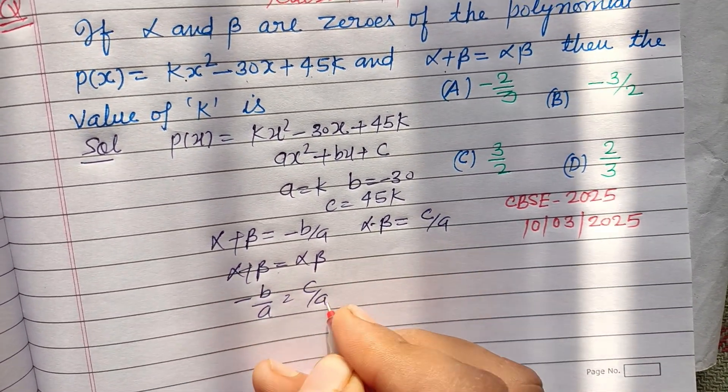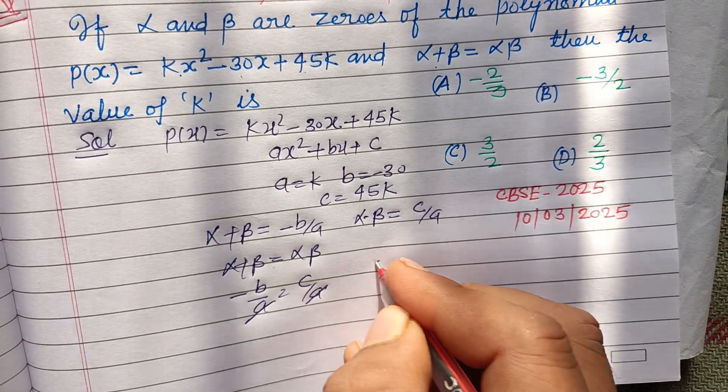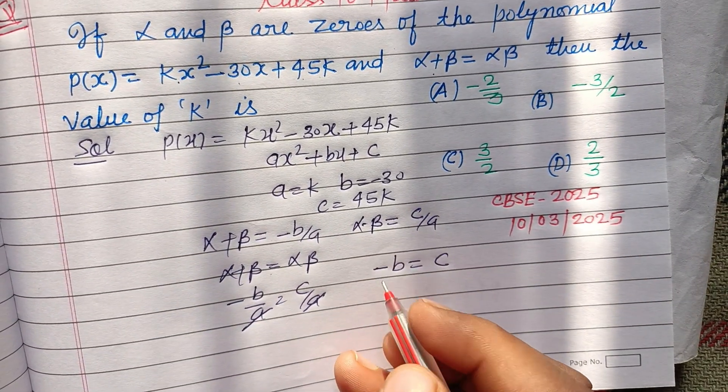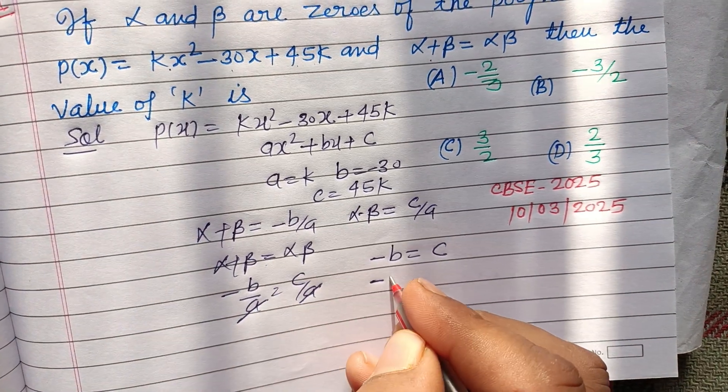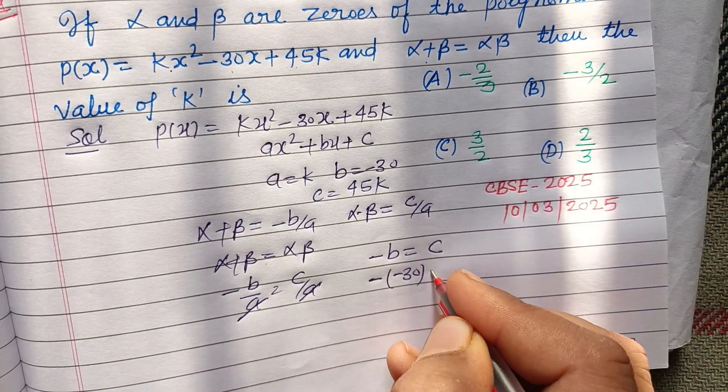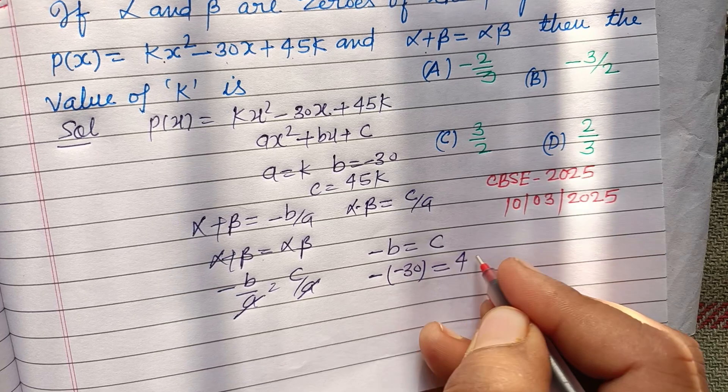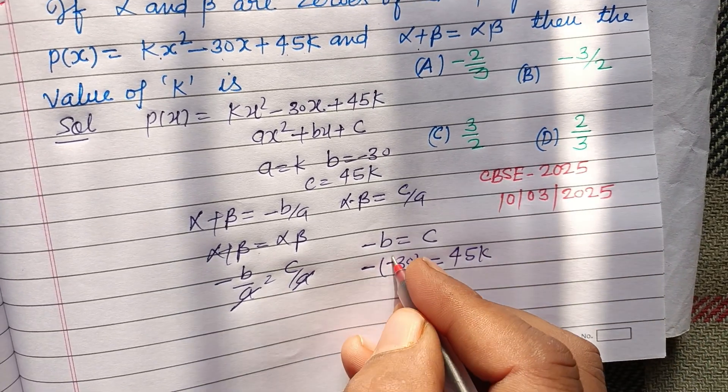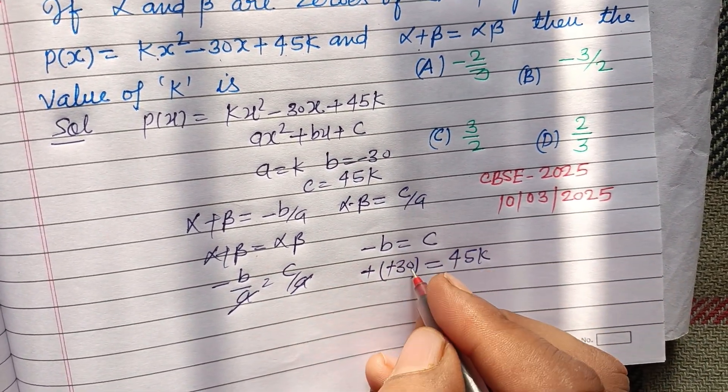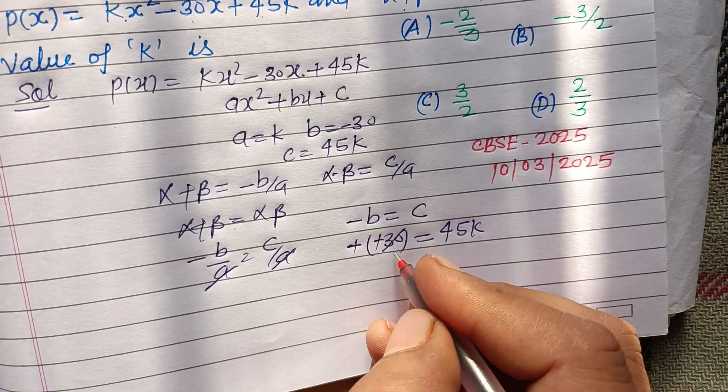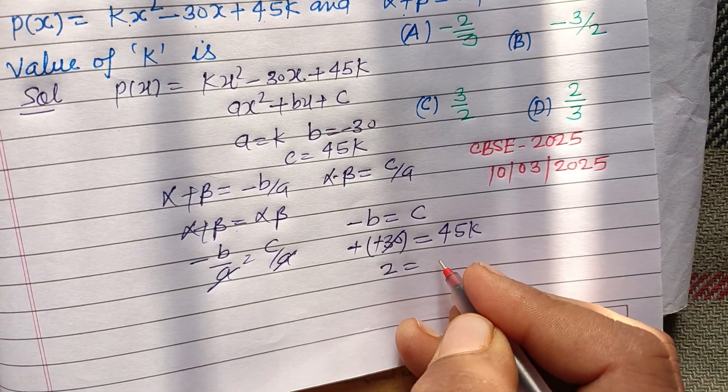a cancels, we get -b = c. So b is -30 and c is 45k. Minus times minus gives plus, and we divide: 2 goes into 30 giving 15, and 3 goes into 45.